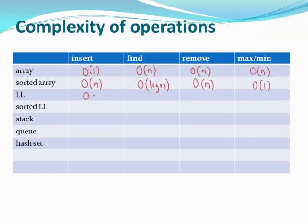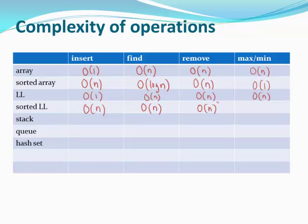For a linked list, you can insert at the front in O(1). Finding requires traversing the list at O(n), removing also requires traversal at O(n), and finding max or min requires looking at all elements at O(n). For a sorted linked list, there is no advantage — insertion requires O(n) to maintain sorted order, and finding, removing, and max/min all still require O(n).